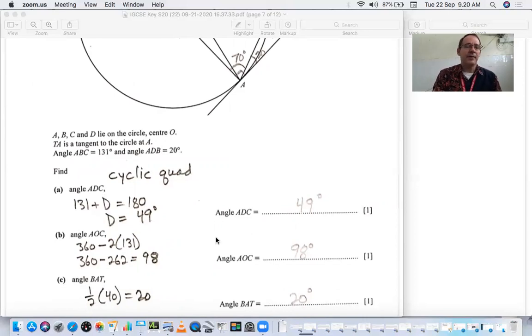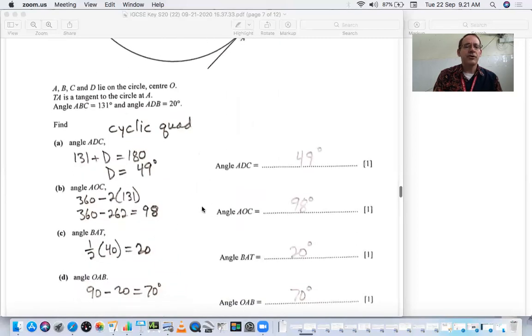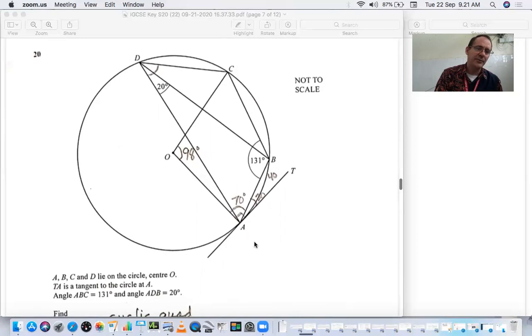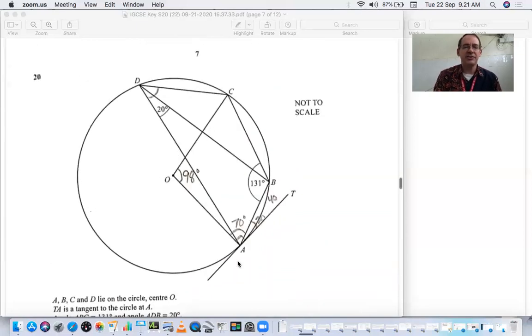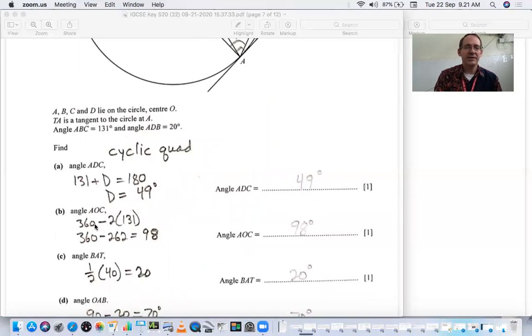Now angle AOC. Angle AOC is right here, the angle that is opposite of the 131. This 131 is an inscribed angle, which means the arc that's over here, this major arc from A to C is going to be twice that. Inscribed angles are half of the arc. So if we multiply that by two, subtract it from 360, that leaves 98 degrees for this minor arc. The central angle is equal to the minor arc of 98 degrees. 360 minus two times the 131 gives you 98, which is equal to your central angle.